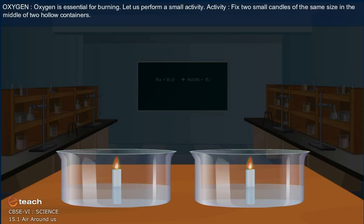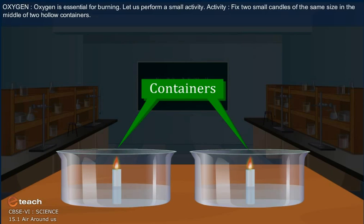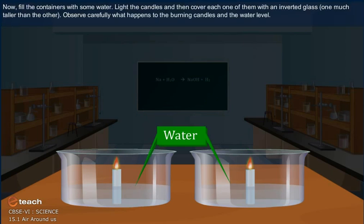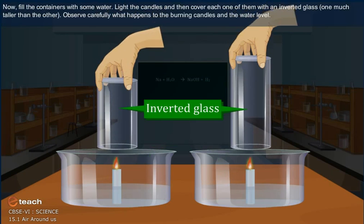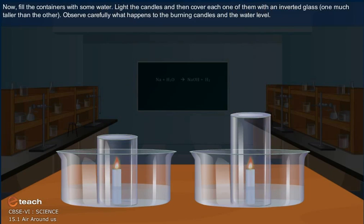Fix two small candles of the same size in the middle of two hollow containers. Now, fill the containers with some water. Light the candles and then cover each one of them with an inverted glass, one much taller than the other.